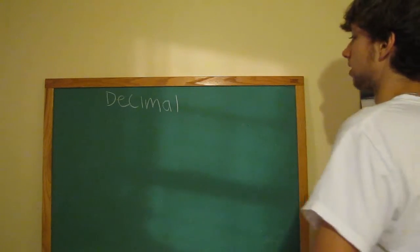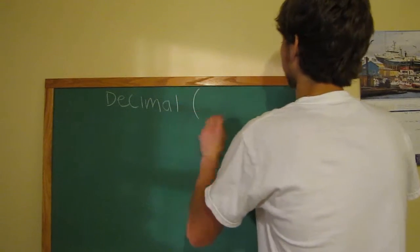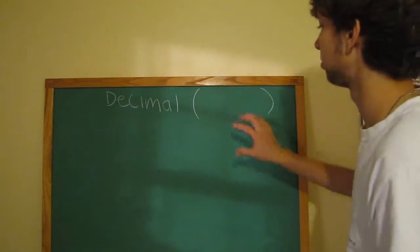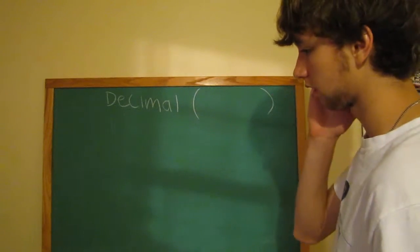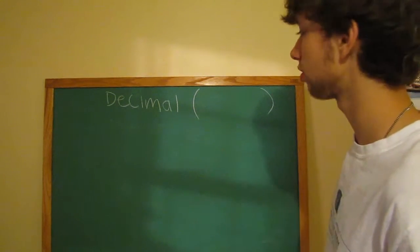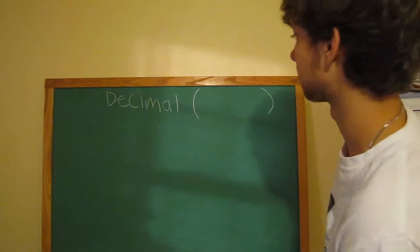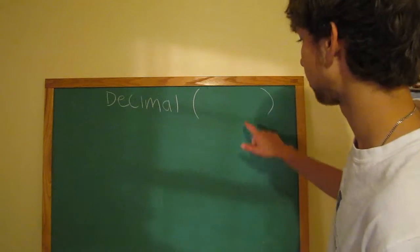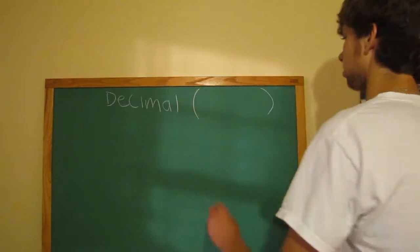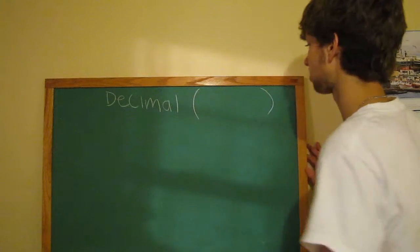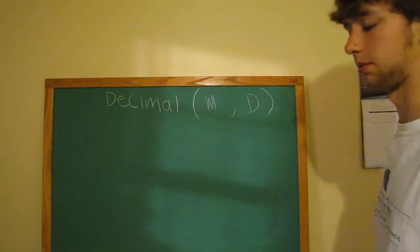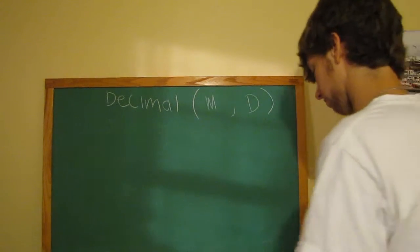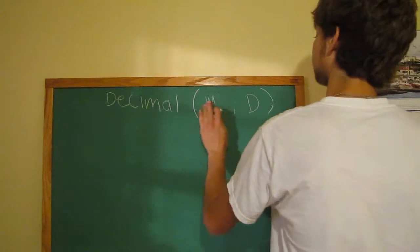If you remember with, like, varchar and also int, you could put parentheses and put more information in here that would alter what was allowed. Now, for integer, it just affected the display. For this, there's actually two. So, what is commonly used are the variables m and d, but you don't really need to know that. You just need to know what they do.